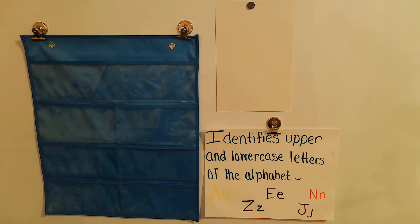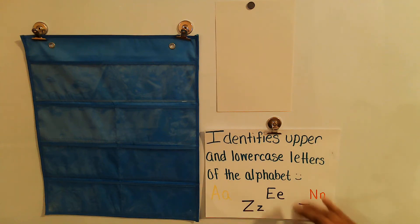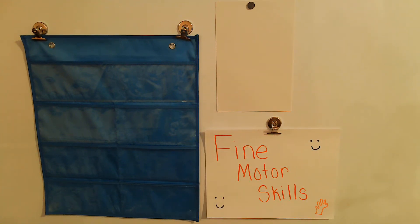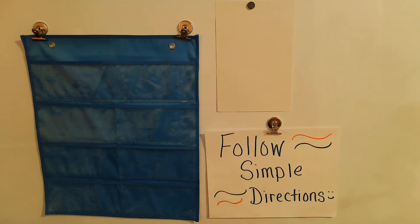Good morning friends and welcome back to the show. We're going to start with our kindergarten readiness goals. Today we're going to learn an uppercase letter and a lowercase letter that we've not learned before. Next we're going to work on our fine motor skills — you're going to draw a picture — and then you're going to practice following simple directions. Miss Bacon loves when her friends make good choices and turn their ears on to listen.